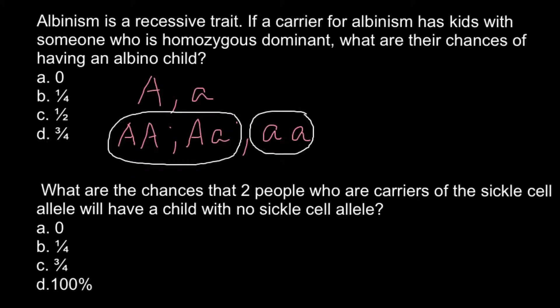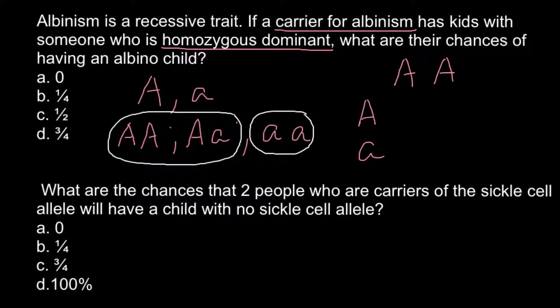Two of these genotypes make one dominant phenotype and the third genotype makes a second phenotype. The first problem: albinism is a recessive trait. If a carrier for albinism has kids with someone who is homozygous dominant, what are the chances of having an albino child? One parent is a carrier, meaning heterozygous genotype — phenotypically normal but carrying the recessive allele. The other parent is homozygous dominant. To predict the outcome, we build a Punnett square.